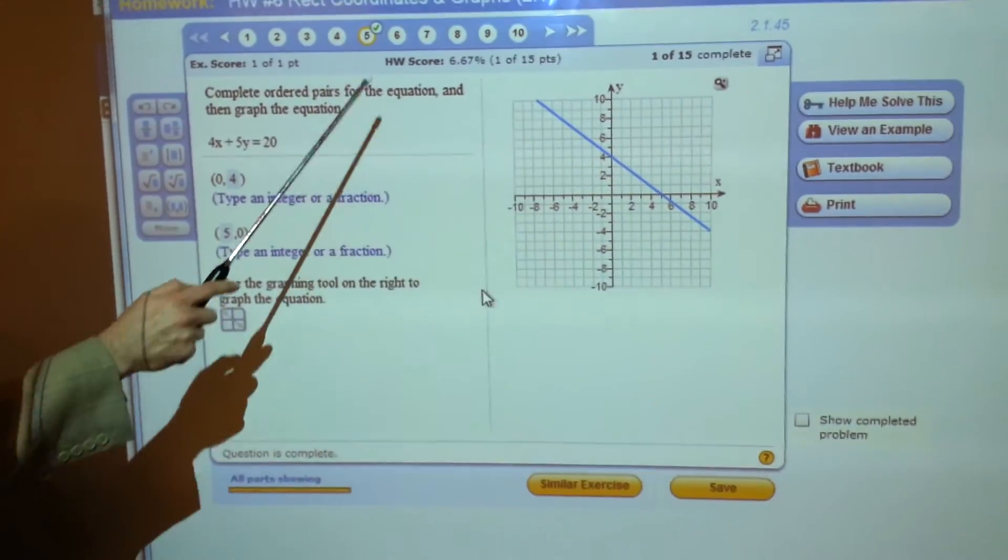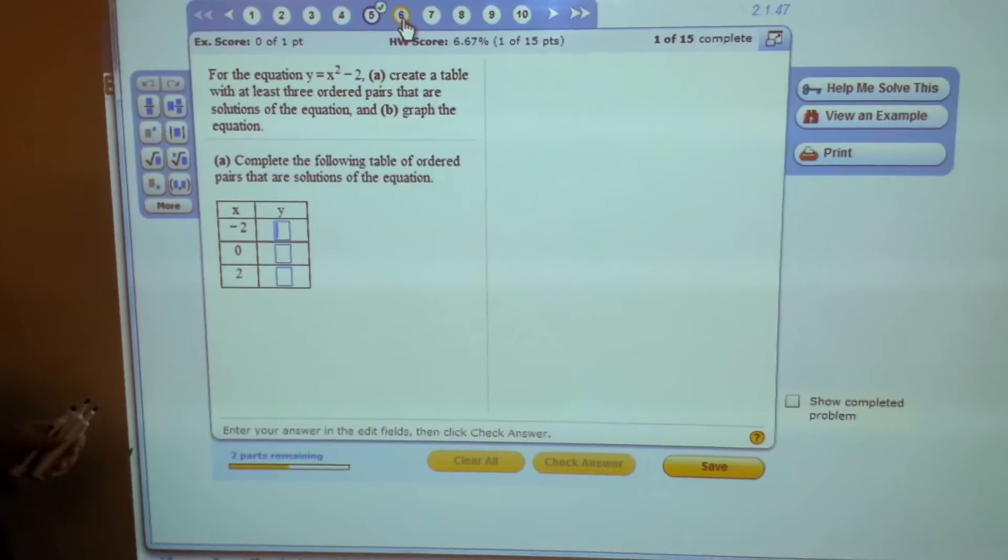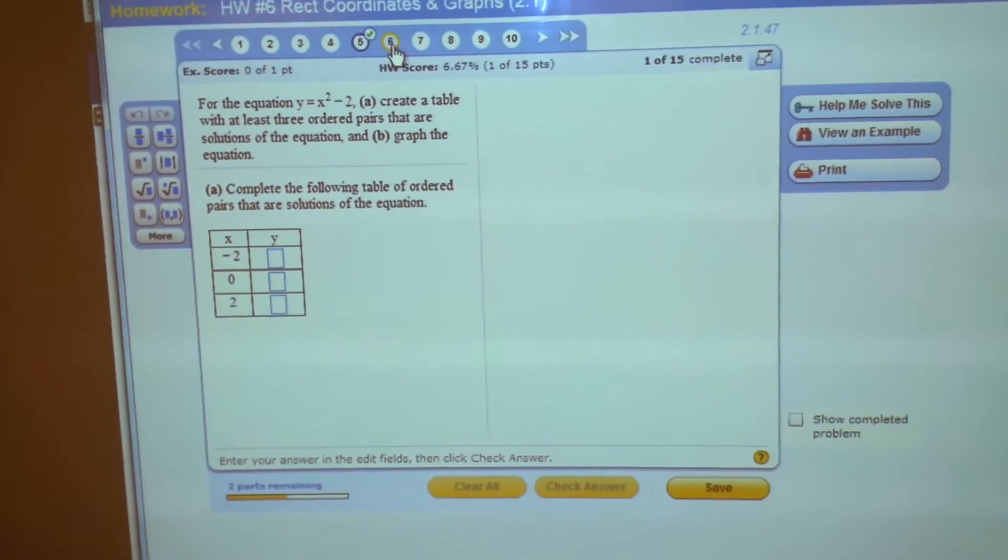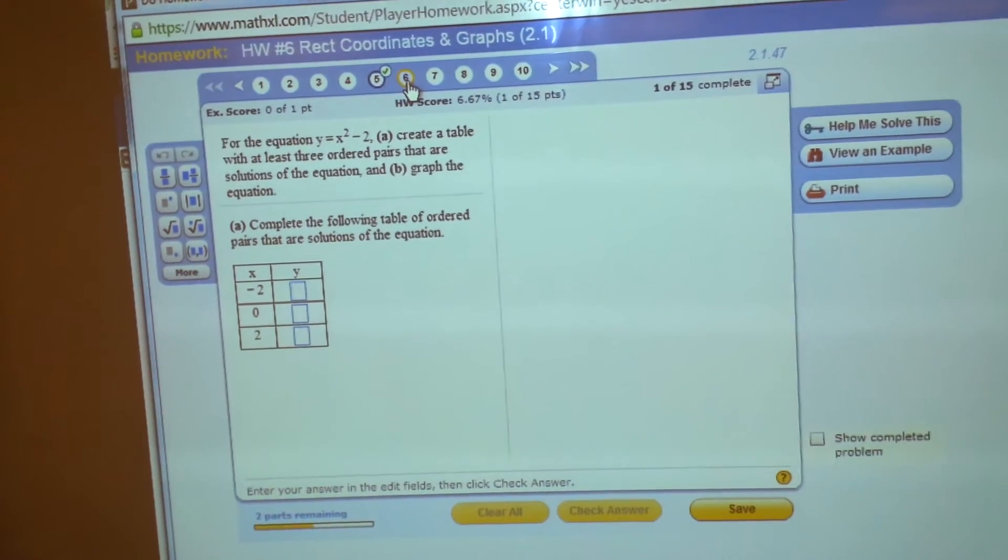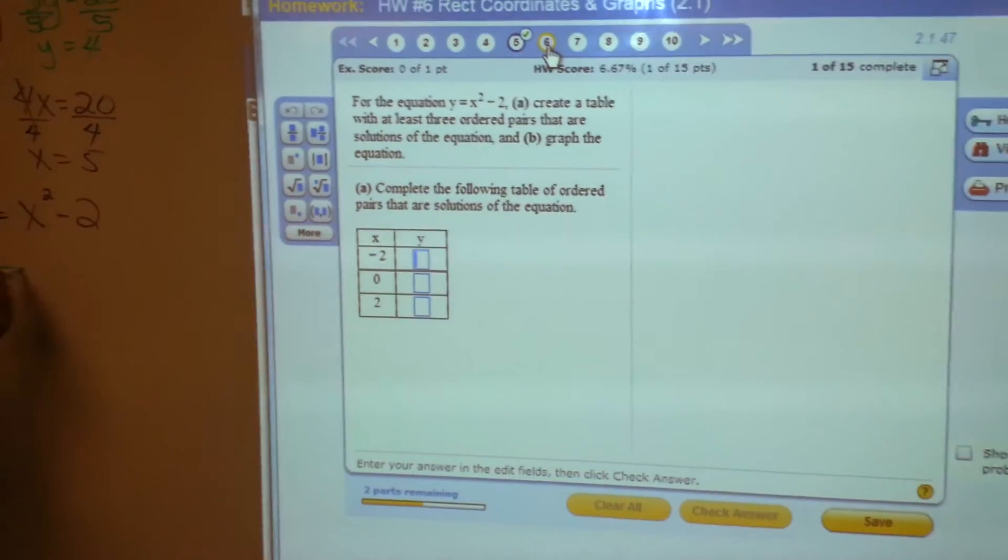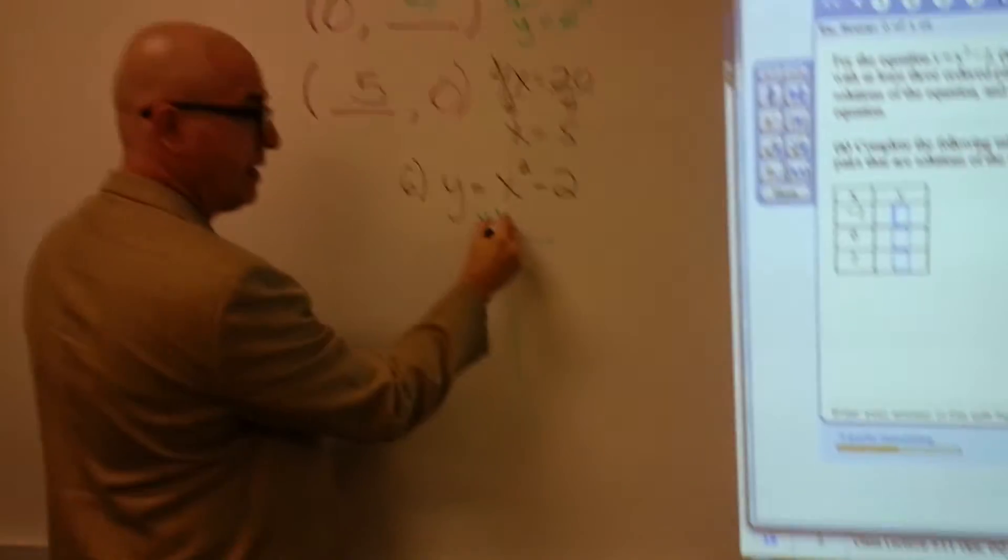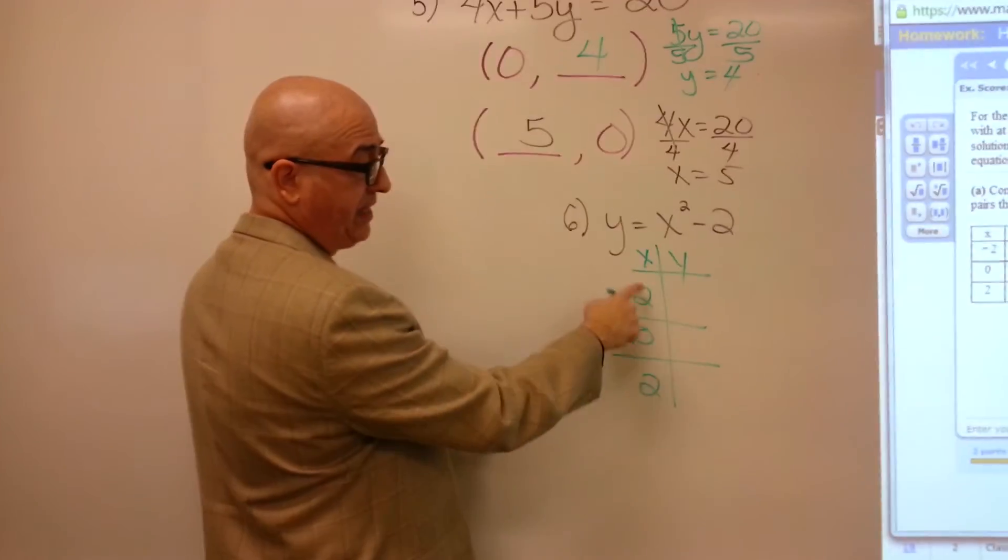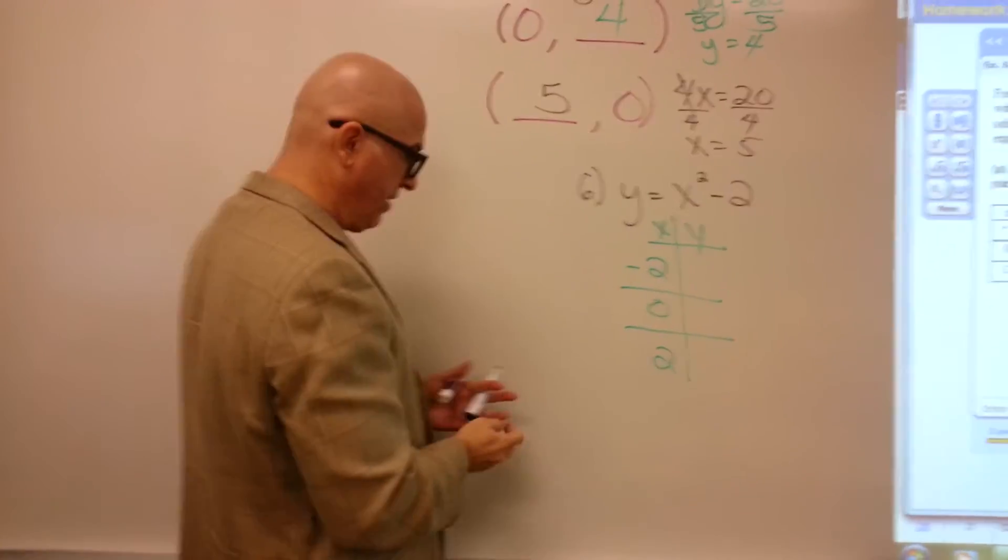Let's do another one. And this one isn't going to be a line. Y equals x squared minus 2. Look at the table we're given. Telling us to plug these numbers in for x.